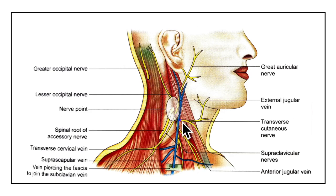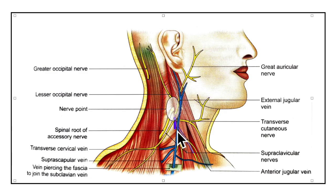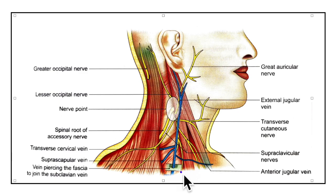Next let's look at the transverse cutaneous nerve. It runs transversely across the sternocleidomastoid muscle to supply the skin of the neck. Now let's learn about the supraclavicular nerves. They emerge at the posterior border of the sternocleidomastoid and descend downwards, dividing into three branches. The medial branch supplies the skin over the manubrium till the manubriosternal joint. The intermediate nerve crosses the clavicle to supply the skin of the first intercostal space till the second rib. The lateral nerve runs across the lateral side of the clavicle and the acromion to supply the skin over the upper half of the deltoid muscle.